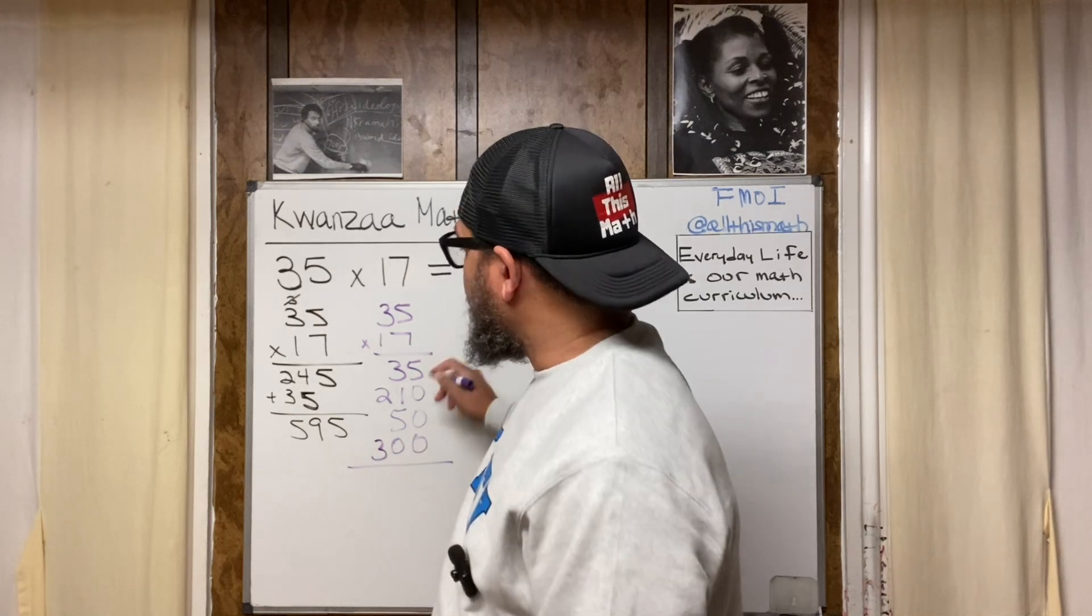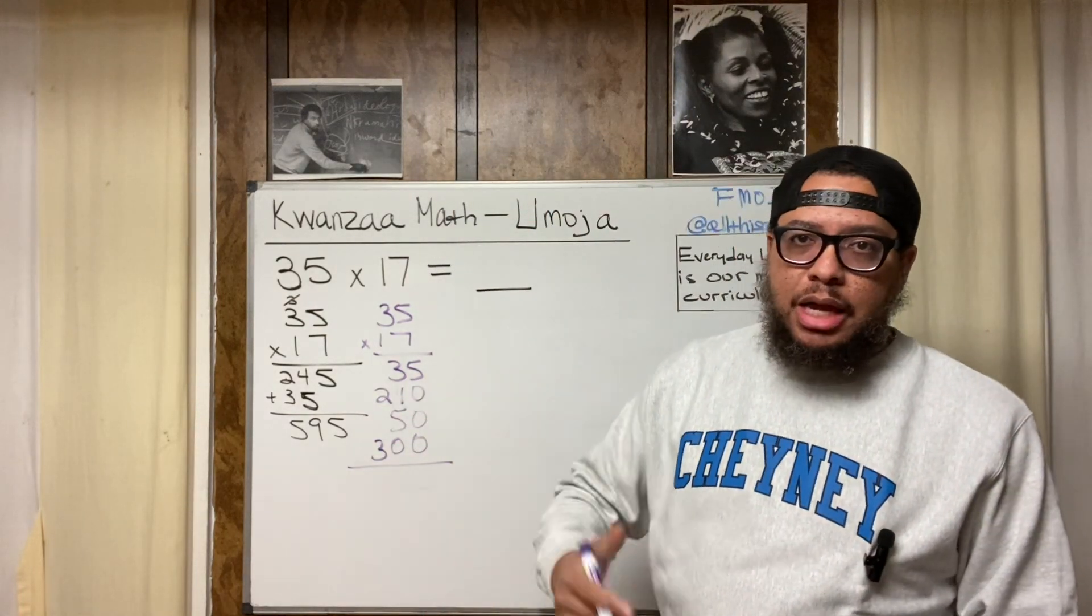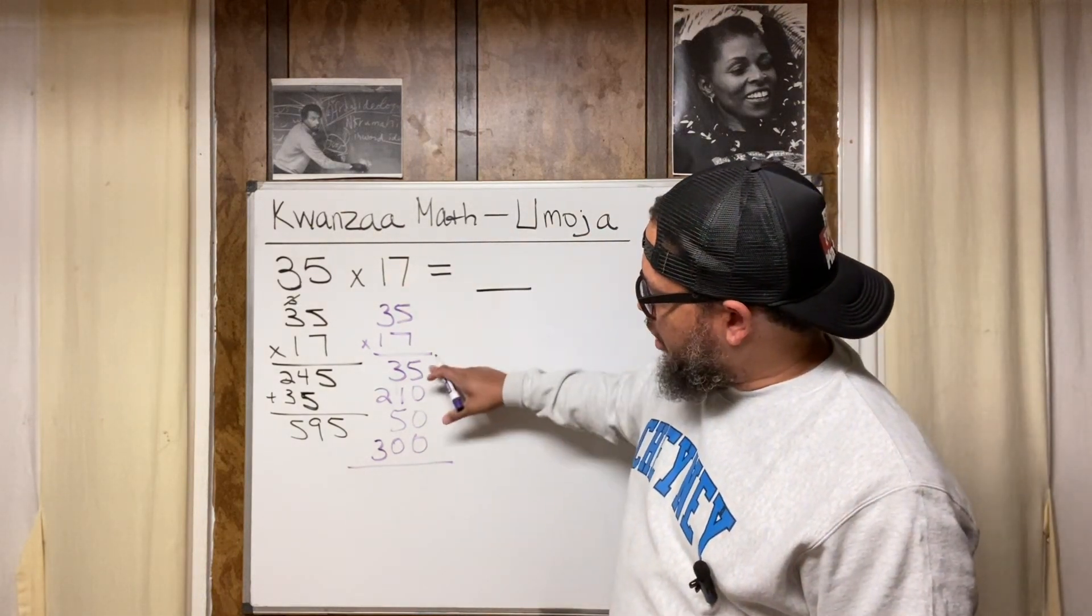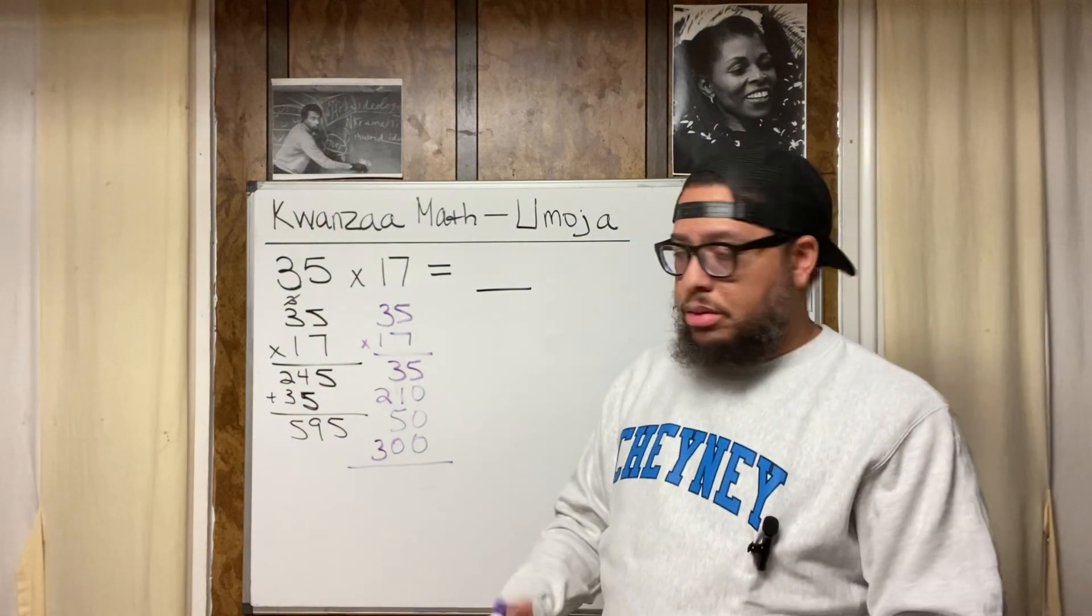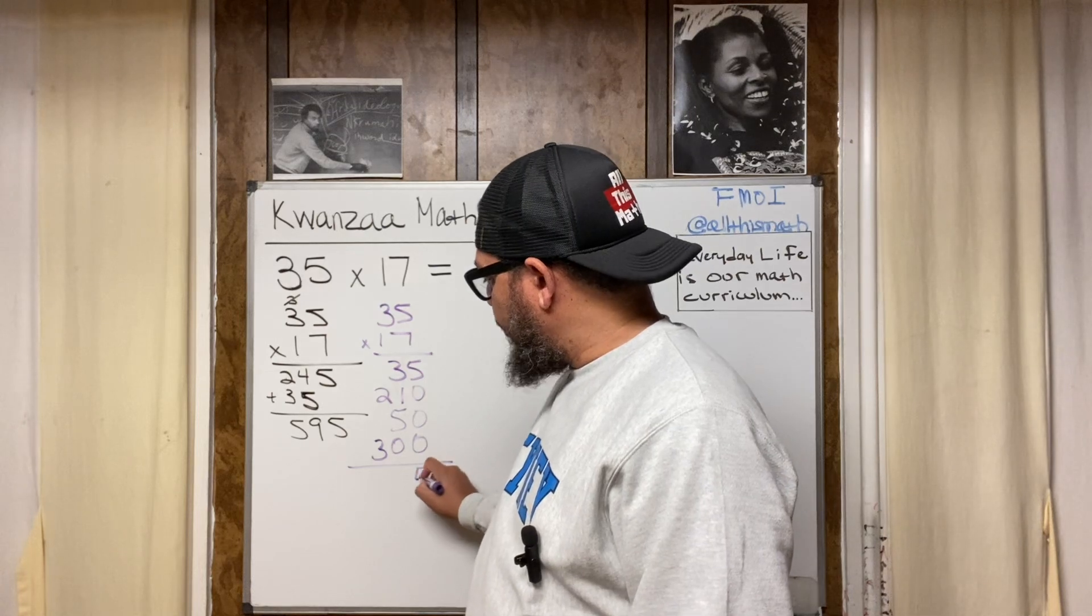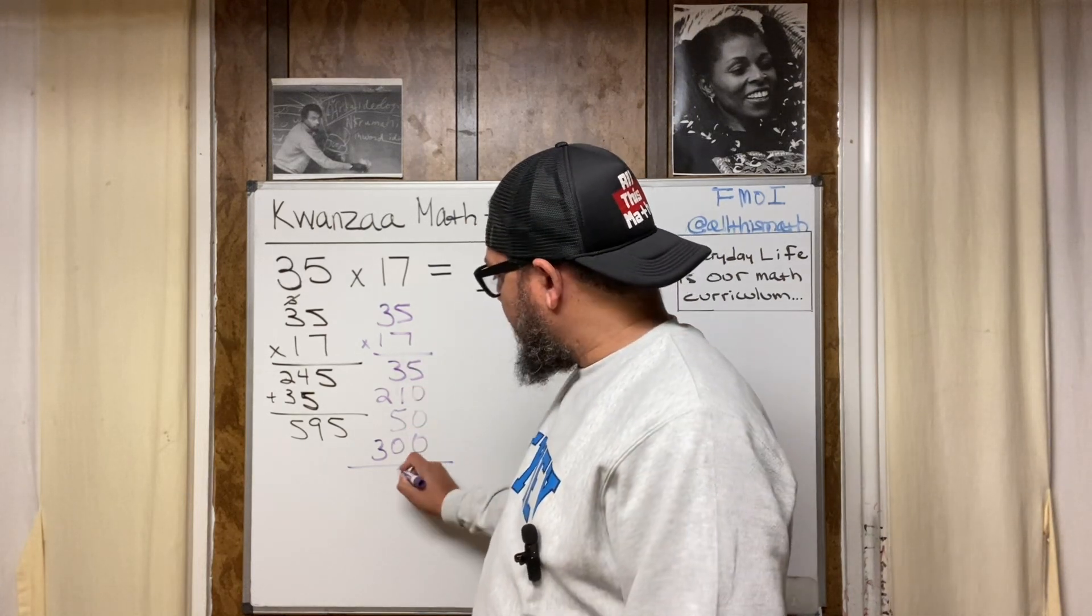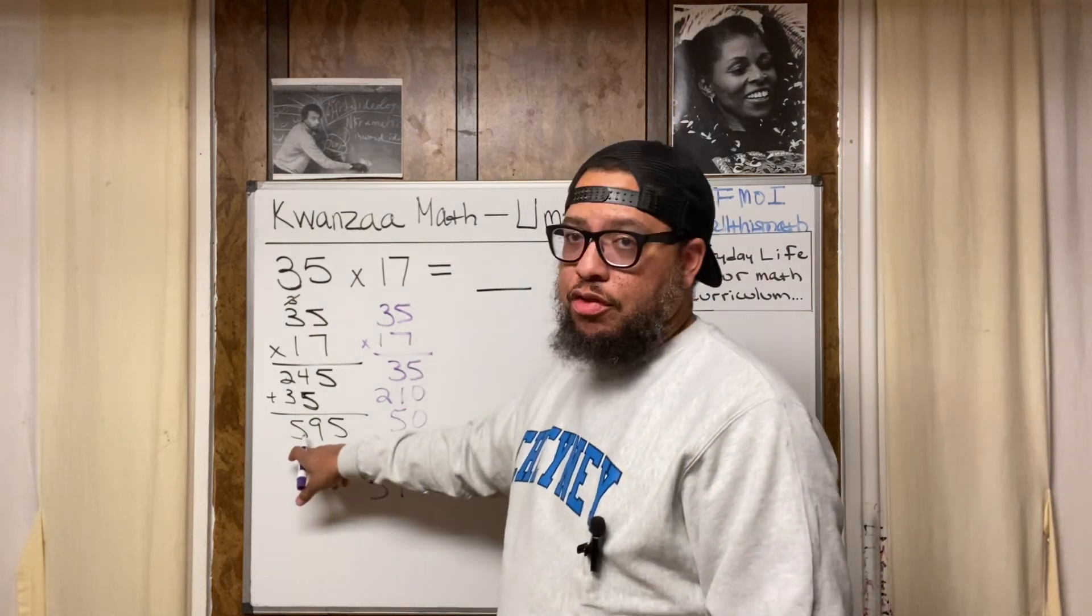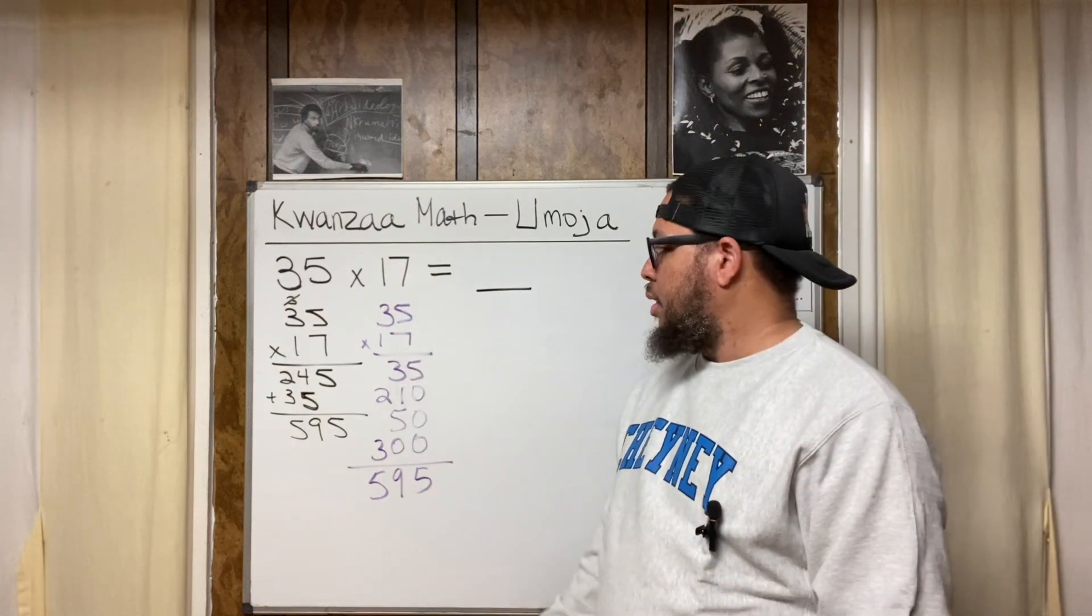And now, I've multiplied. Now, this is called the partial products method. Just like everything in math has a name for a reason because each of these numbers are a partial product, a partial product. Each of these four numbers. We're going to add them up to get the final product. So I could do 5 plus a bunch of zeros. It's just 5. 3 plus 1 is 4. 4 plus 5 is 9. 9 plus 0 is 9. 2 plus 3 is 5. And look what happened. I got 595 doing it the first way. I got 595 doing it the partial products way. So again, unity. Unity.